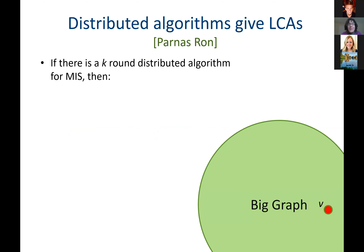Distributed algorithms compute on themselves as input. If I have the connectivity network the distributed algorithm is operating on, that's a graph — they're solving problems on the graph of their own connectivity network. When the distributed algorithm is solving maximal independent set, it's because they want to figure out how they can broadcast so that no node broadcasts and collides with its neighbors. In our case the input is written down and we can access it; for distributed networks their interconnectivity network is the input. The only way they can find out about their neighbor's neighbor is to ask their neighbor — they don't have random access.